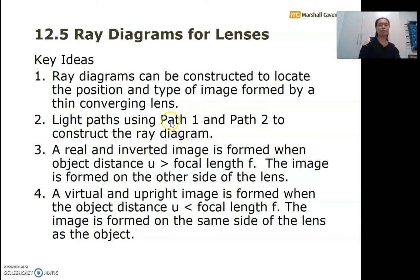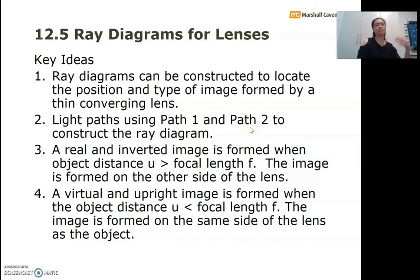Number two: when constructing the ray diagram, you use ray 1 and ray 2 to trace the path of light incident on the thin converging lens. Ray 1 passes through the optical centre without any refraction, and ray 2 — with the incident ray parallel to the principal axis — passes through the principal focus or focal point F.